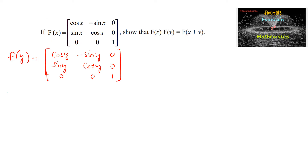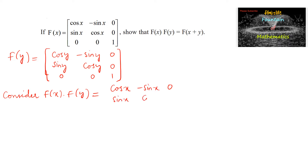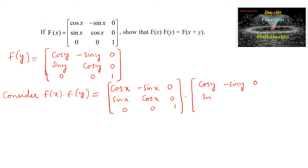Now let's consider f of x into f of y, which is equal to the matrix cos x, negative sin x, 0; sin x, cos x, 0; 0, 0, 1 multiplied by the matrix cos y, negative sin y, 0; sin y, cos y, 0; 0, 0, 1.